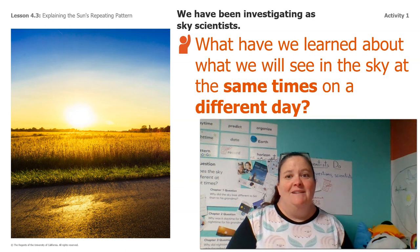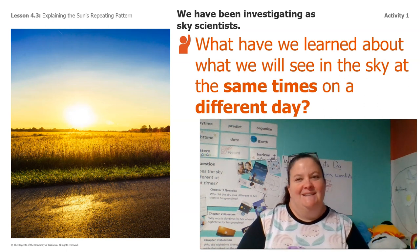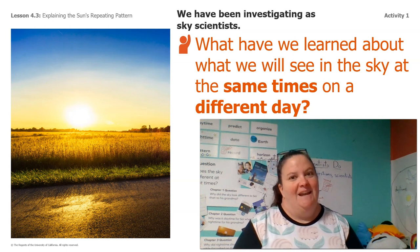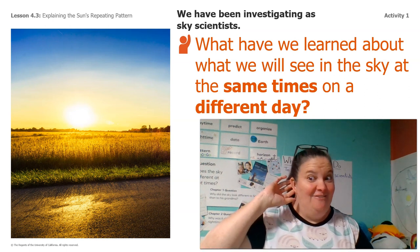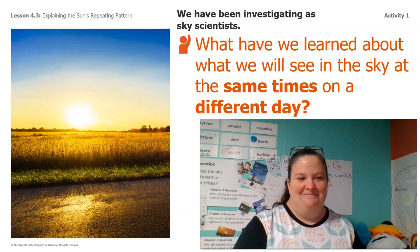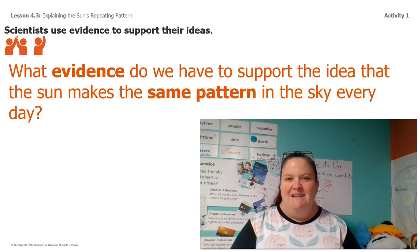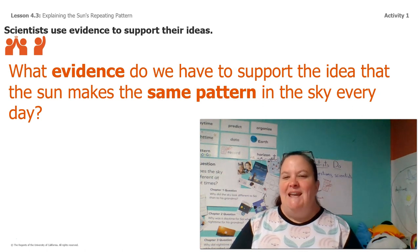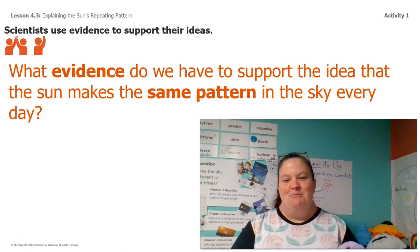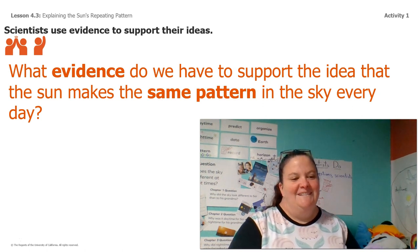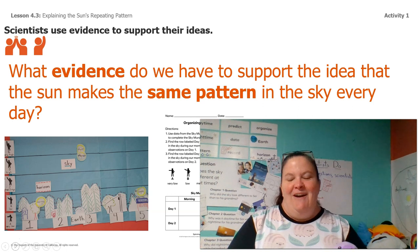We have been investigating for a long time as sky scientists. What have we learned about what we'll see in the sky at the same time on a different day? Scientists use evidence to support their ideas. What evidence do we have to support the idea that the sun makes the same pattern in the sky every day? There were two big pieces of evidence from last time — the sky mural and our data table.